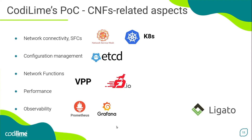To prepare our CNFs to work in such an environment, we must build and configure them accordingly. Here, the Legato framework comes to our aid, making it possible. As you can see, some of the above-mentioned technologies like ETCD, Kubernetes, Prometheus and Grafana are quite popular today — they are often essential elements of today's architectures, especially those based on microservices and the cloud-native paradigm. On the other hand, technologies and platforms such as VPP, Legato or NSM address more specific needs. Now it's time to take a closer look at the latter and understand how they work and what they can bring to us.